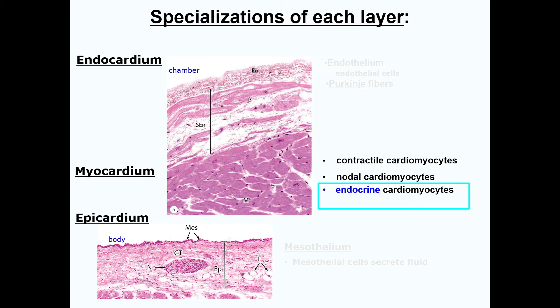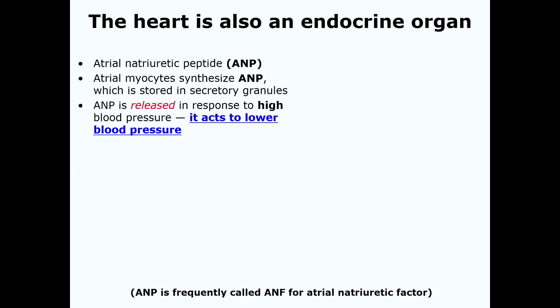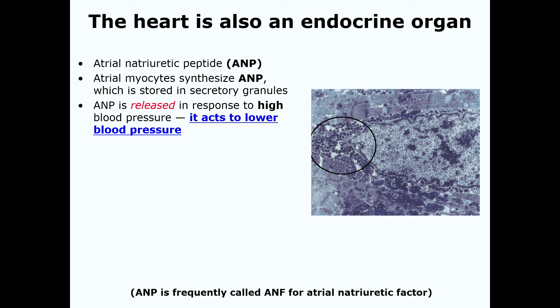Another specialization found within the myocardium is the presence of endocrine cardiomyocytes. These cells are found in the atrial wall, and they release a hormone known as atrial natriuretic peptide or factor. ANP or ANF is released in response to high blood pressure, sensed by receptors that detect increased stretch, and this hormone acts to lower blood pressure. In this electron micrograph, you can see a myocyte releasing ANP granules.